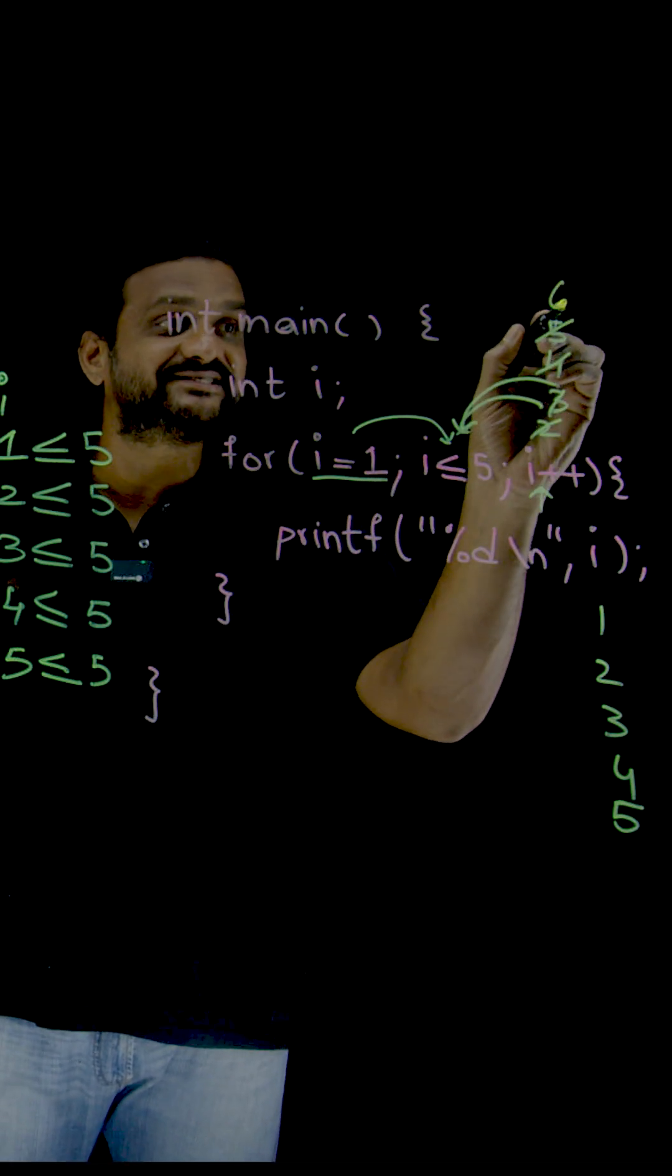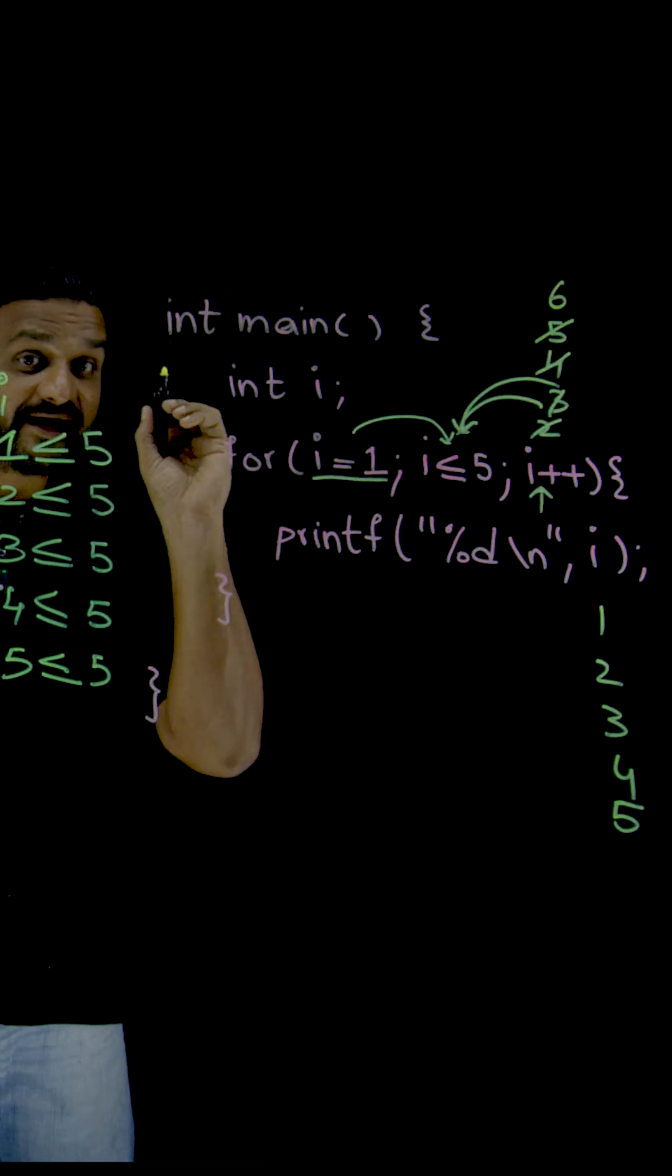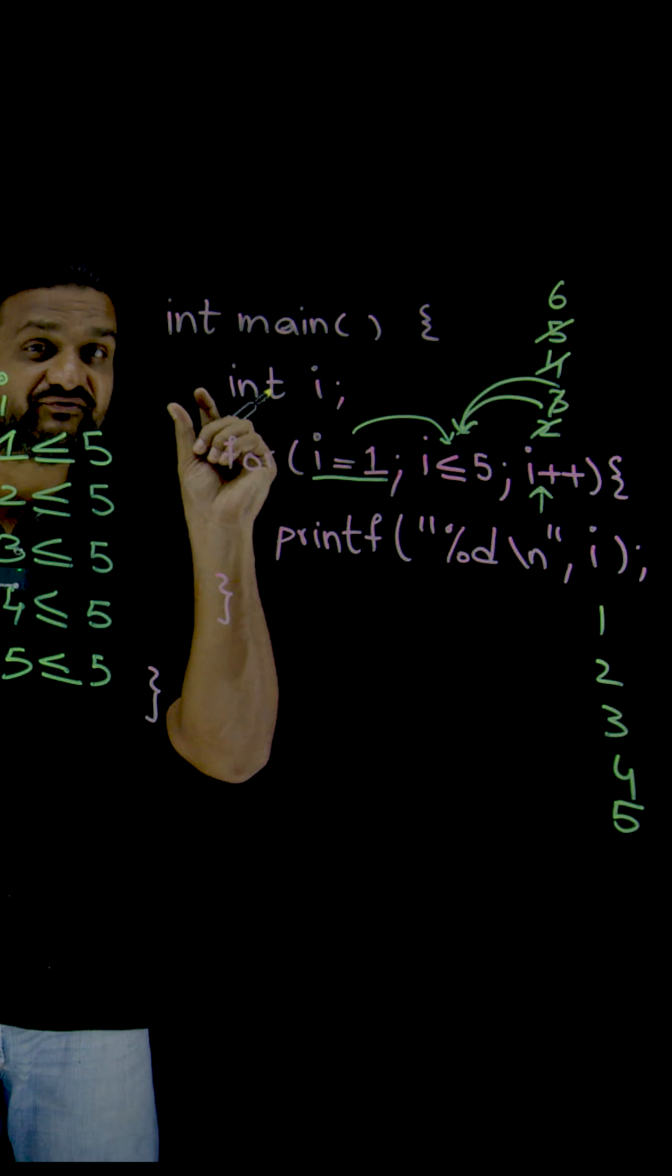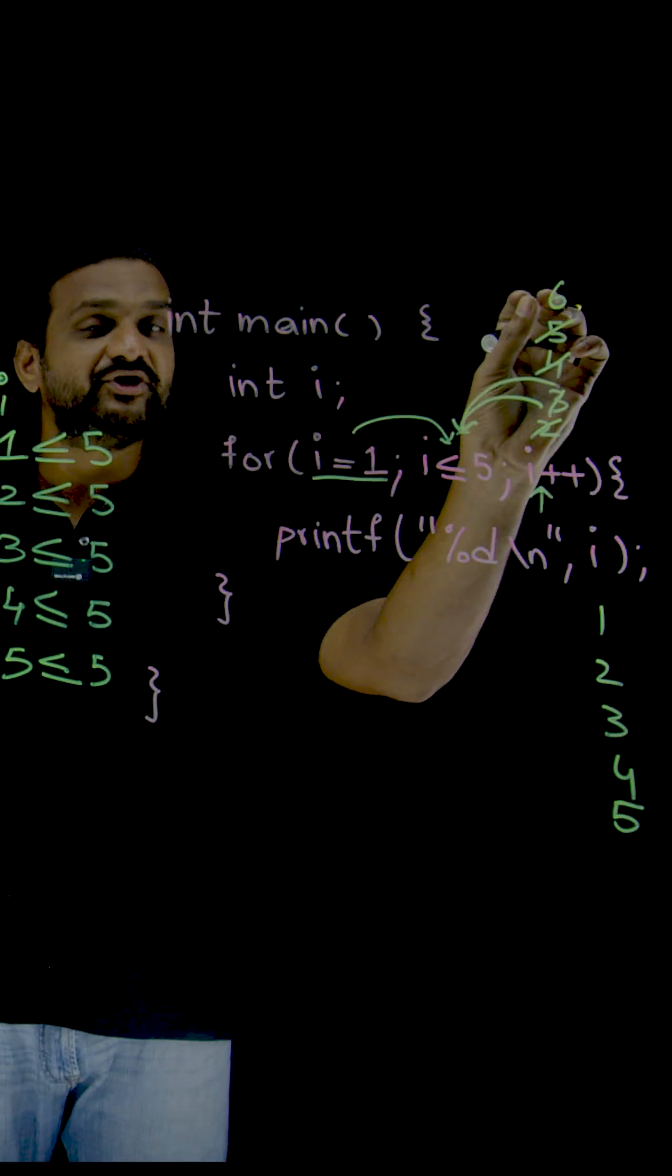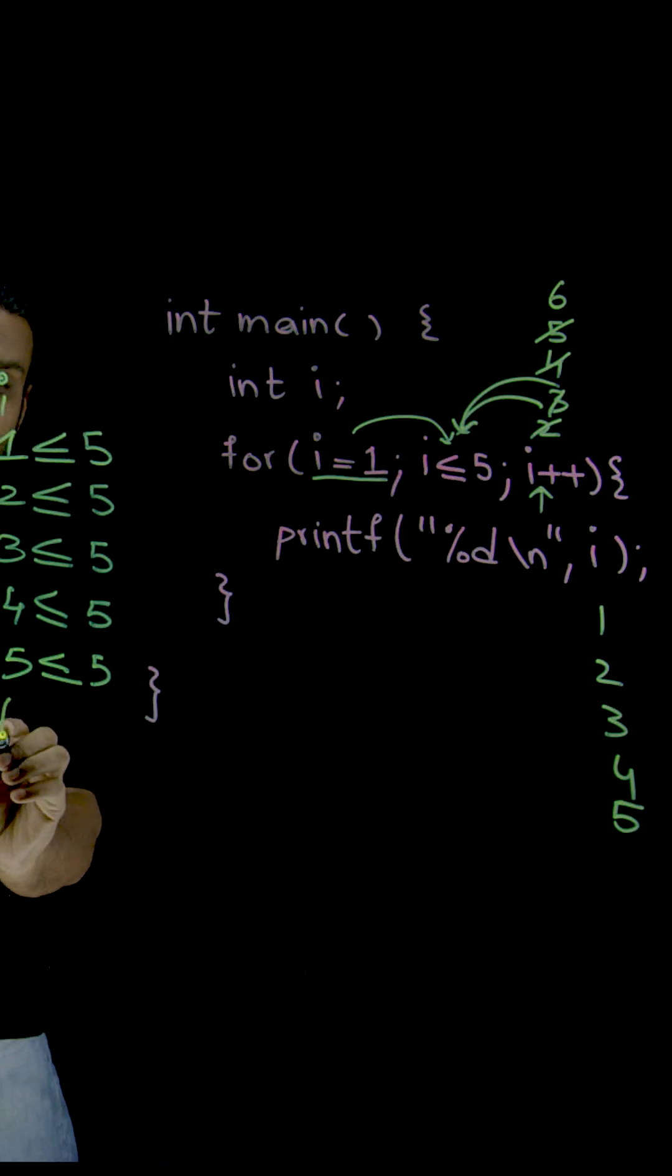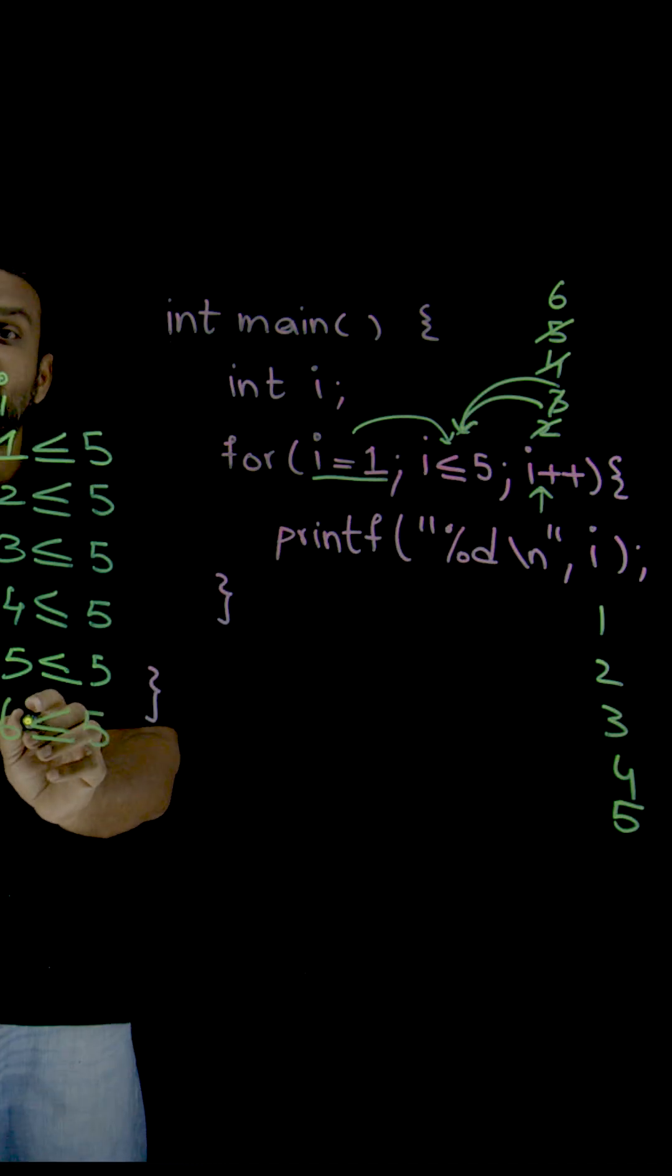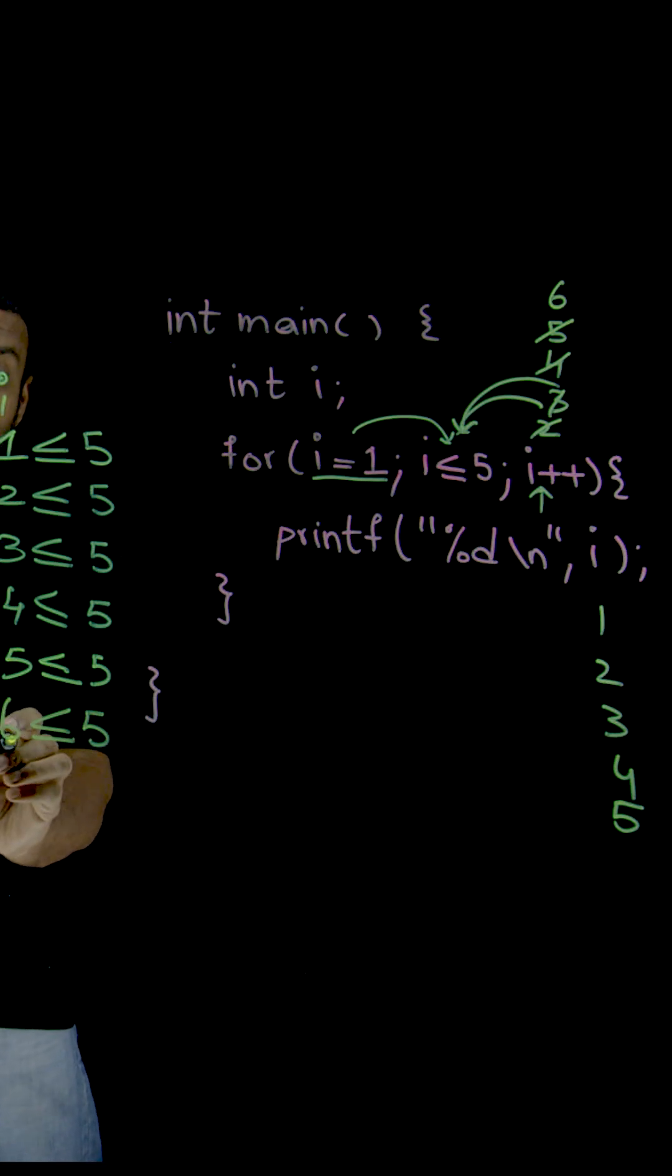So the new value of i is 6. Try to understand this concept. This is very, very important concept. So now the new value is 6. Now we are going to check the value of 6 less than or equal to 5. Is it true? No, it is not true. Because the value of 6 is greater than 5.